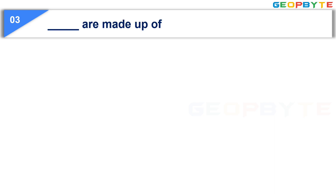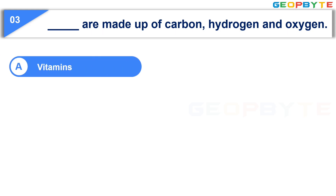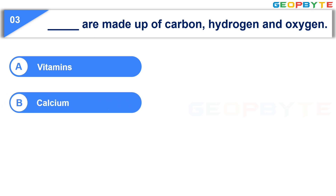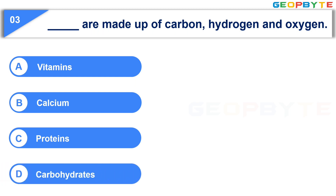Let us see the third question: Blank are made up of Carbon, Hydrogen, and Oxygen. Option A: Vitamins. Option B: Calcium. Option C: Proteins. Option D: Carbohydrates.